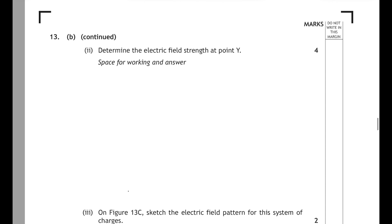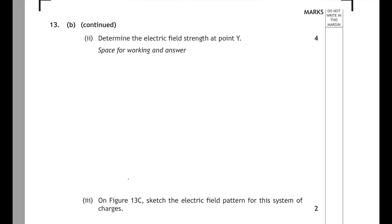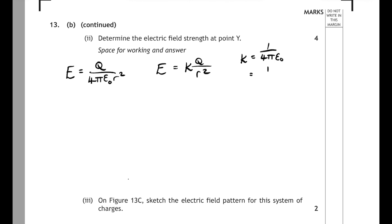Part B(2): determine the electric field strength at point Y. From the relationship sheet, E = Q / (4πε₀R²), or using the shortcut E = KQ/R². The shortcut works because computing 1/(4πε₀) with ε₀ = 8.85×10⁻¹² gives a constant of 9×10⁹. That value doesn't appear on the data sheet, but you can use it to save time.